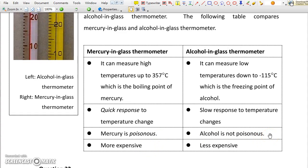Alcohol, on the other hand, is not poisonous and the thermometer is cheaper but it produces slower response to temperature changes.